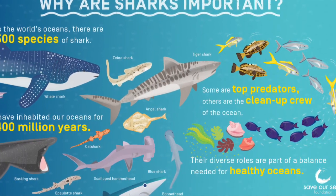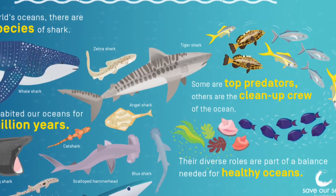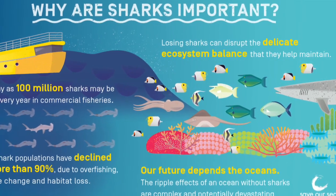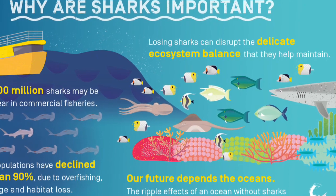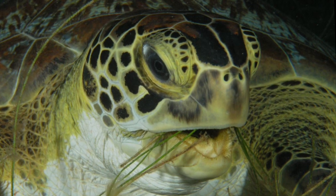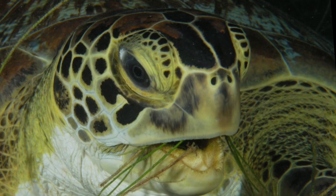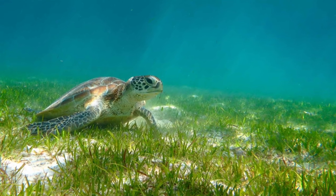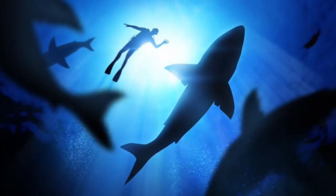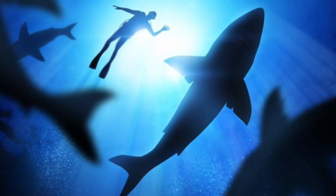Why should we worry about shark numbers declining and species becoming extinct? Well, they play a vital role in our oceans. As apex predators, they maintain their prey at a healthy number, help remove the weak and the sick, and keep the balance with competitors, helping to ensure species diversity. A great example is the tiger shark, which likes to eat turtles. Turtles eat seagrass, and when tiger sharks are in the area, turtles tend to move around to different seagrass meadows rather than depleting one particular meadow. So whether you love them or hate them, sharks are extremely important to the health of our oceans by maintaining biodiversity.